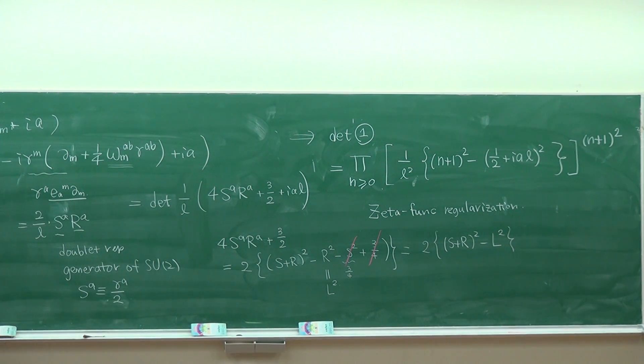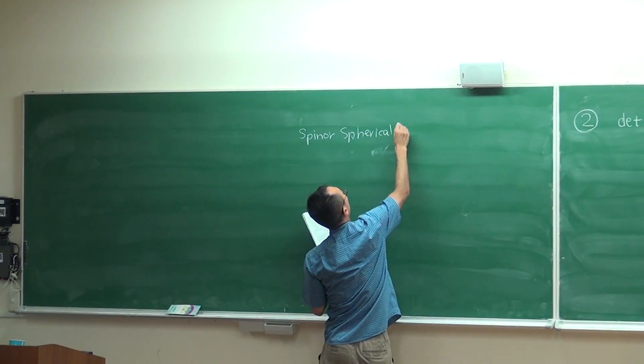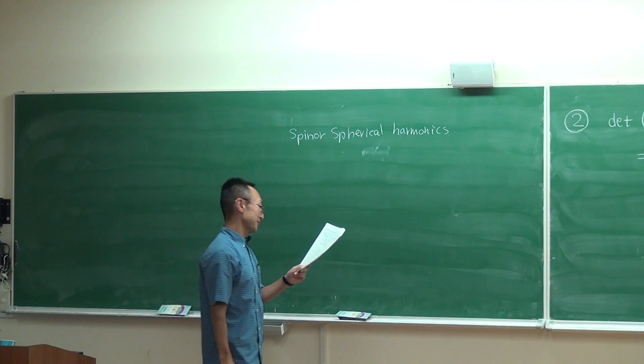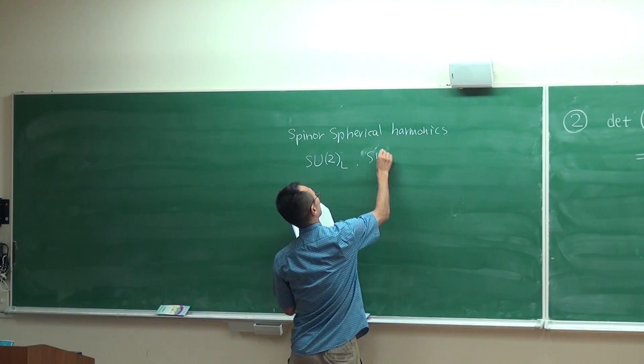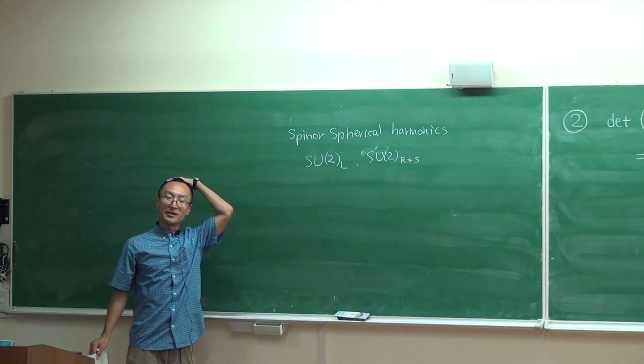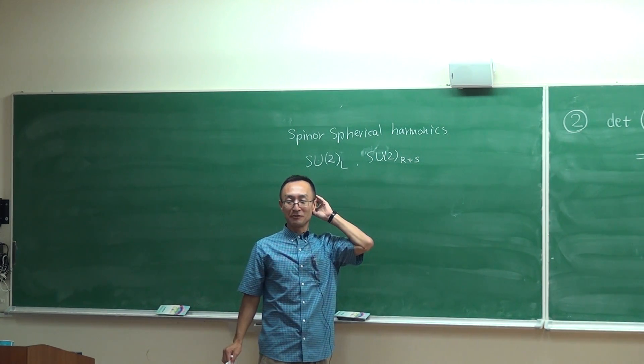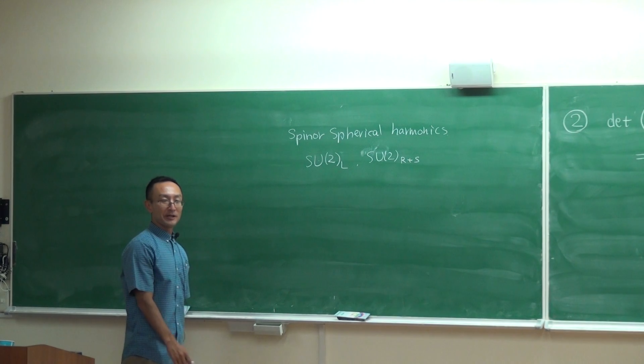Now I use the fact that the Dirac operator can be diagonalized by what is called the spinner spherical harmonics. These harmonic wave functions are basically the fermionic representation of SU(2) left with SU(2) R plus S. One copy of SU(2) is generated by the Killing vectors L, and another copy is generated by a sum of the right generator of SU(2) plus this 2×2 matrix.